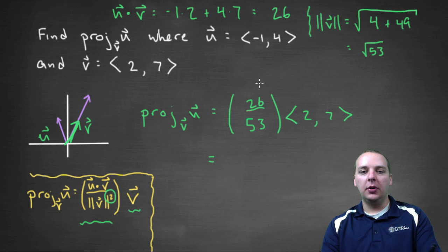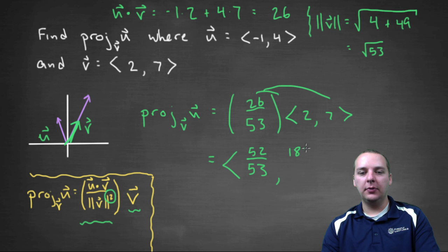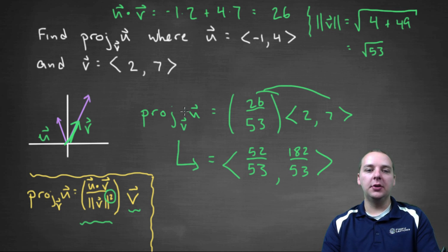So we're just going to distribute this scalar through. And so we would get, what's that, fifty-two over fifty-three, comma, seven times twenty-six—let's see that's pretty big, so a hundred and forty and forty-two—a hundred and eighty-two over fifty-three. So this is a new vector, this is the projection, right here, the projection of u onto vector v.